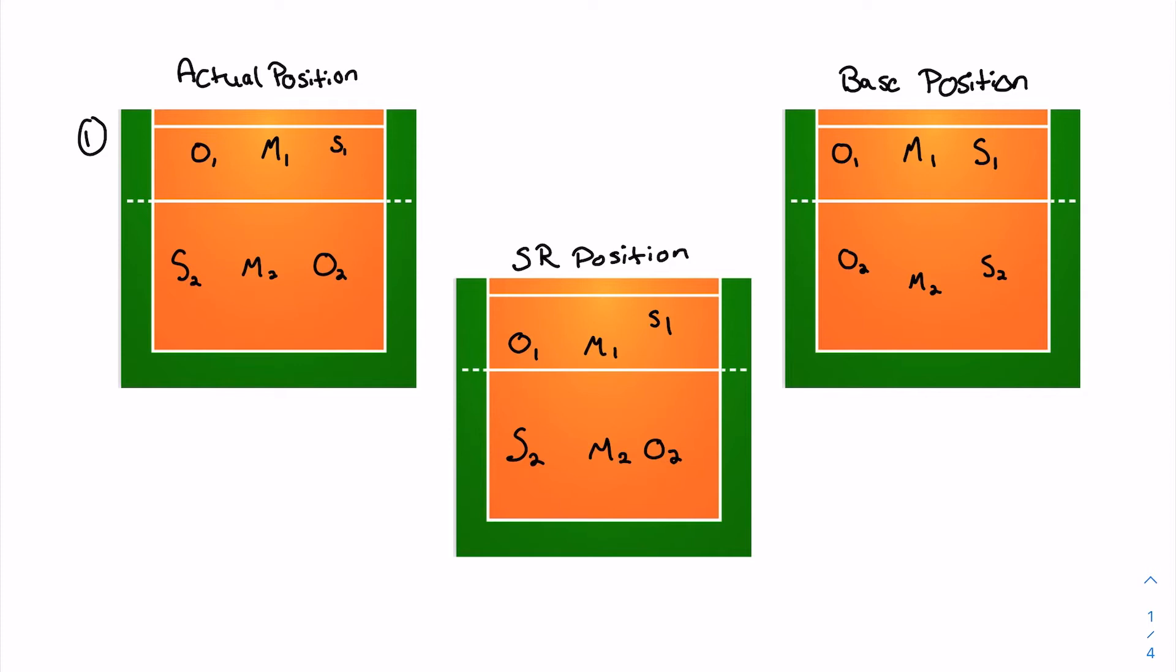So for this first one, your serve receive position, the setter is just kind of going to go up a little bit. You are kind of already in your base for that first one with your middle already in the middle and your outside already in the outside. Your back row though, they are just going to be three across ready to receive the ball. Once the play happens and the ball goes to the other side, your back row will move around a little bit, put your setter on the right, your outside on the left with your middle in the middle.